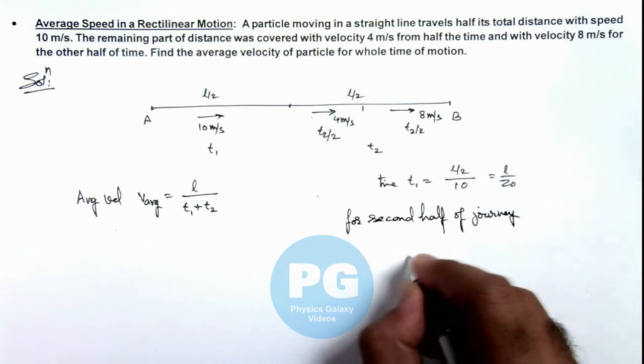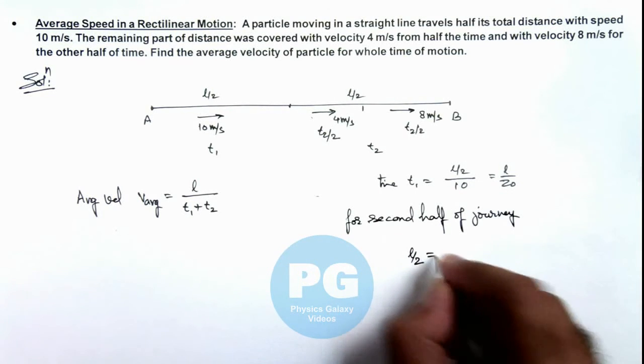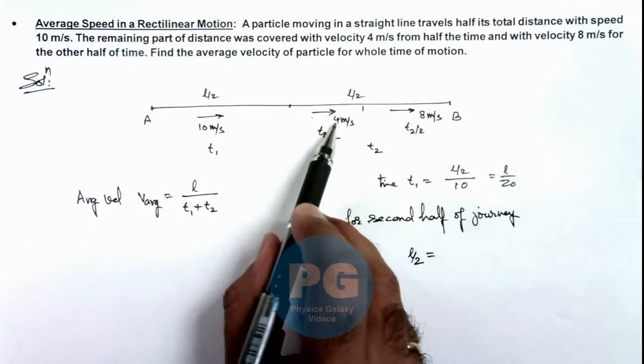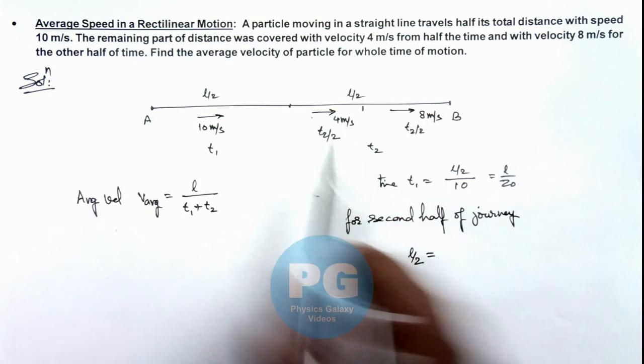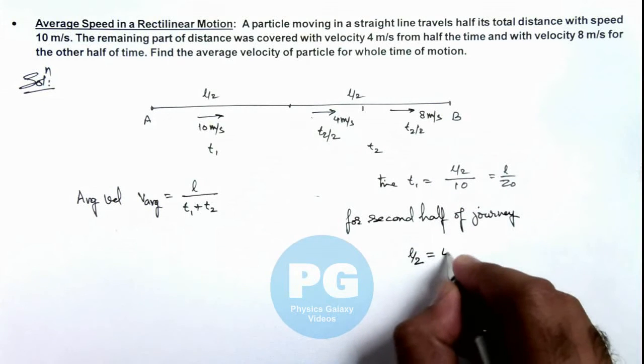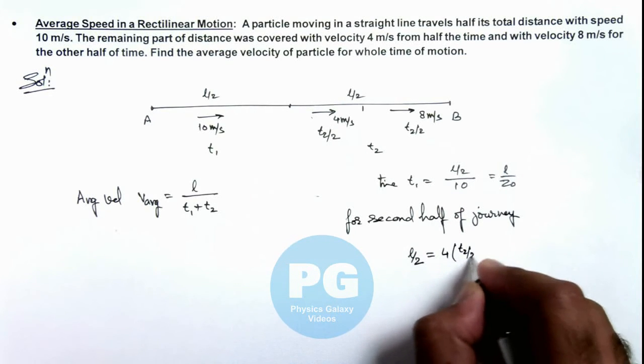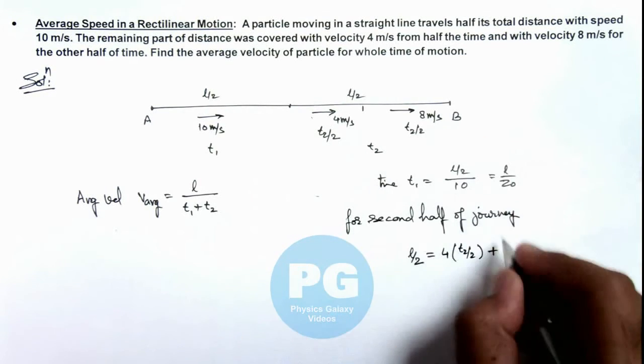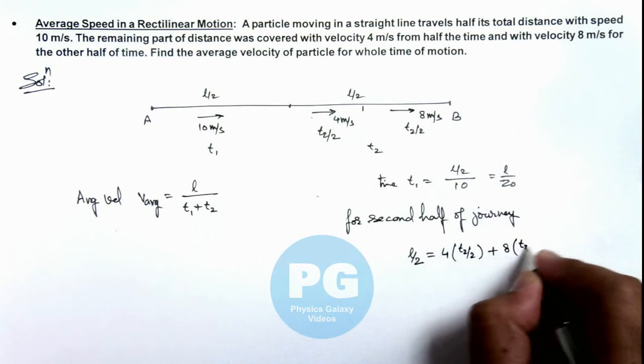Here we can write L by 2 is equal to, it is traveling 4 meters per second for a time t2 by 2, so the distance traveled in this half time is 4 multiplied by t2 by 2, plus 8 multiplied by t2 by 2.